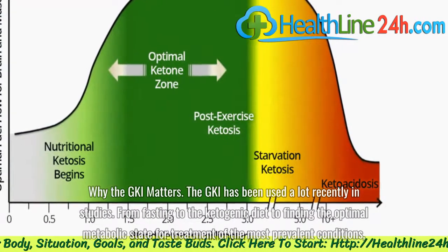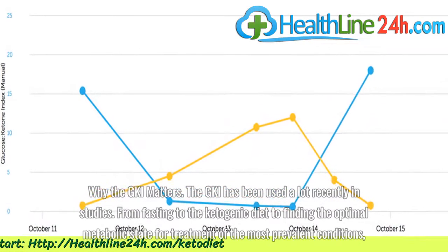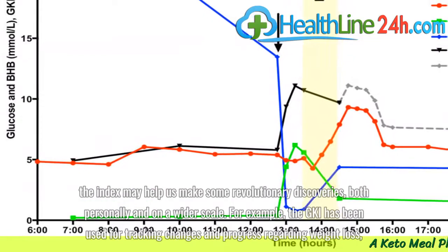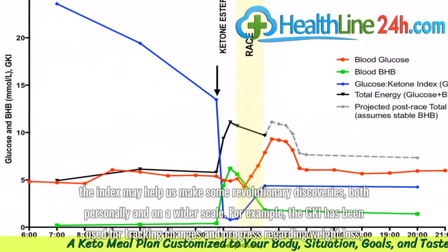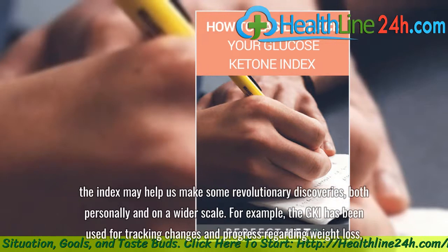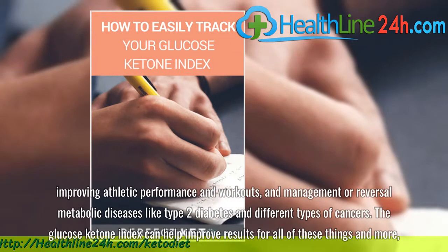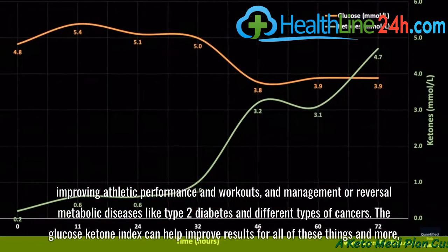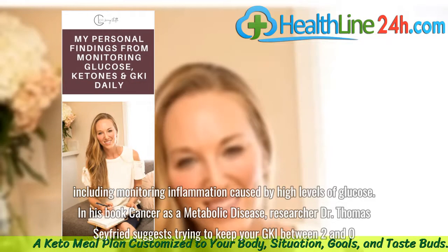Why the GKI matters. The GKI has been used a lot recently in studies — from fasting to the ketogenic diet to finding the optimal metabolic state for treatment of the most prevalent conditions. The index may help us make some revolutionary discoveries, both personally and on a wider scale. For example, the GKI has been used for tracking changes in progress regarding weight loss, improving athletic performance and workouts, and management or reversal of metabolic diseases like type 2 diabetes and different types of cancers. The glucose ketone index can help improve results for all of these things and more, including monitoring inflammation caused by high levels of glucose.